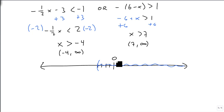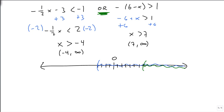Or we come out to 7 and graph to the right. Because this is an OR, it means if it's shaded at all, then the compound inequality is shaded — anything that has shading gets shaded. So our answer is negative 4 to positive infinity, because that will make either one or the other of them true.